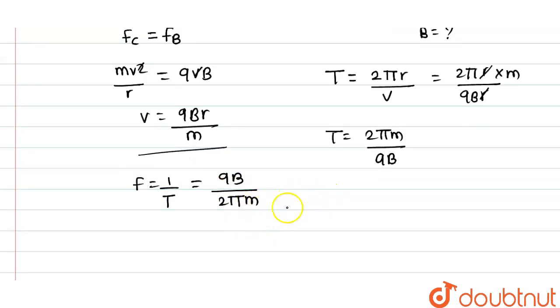Now we can write this expression for magnetic field as B = 2πmf/q. So this is the required equation.